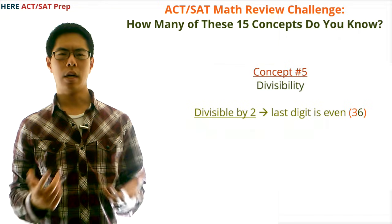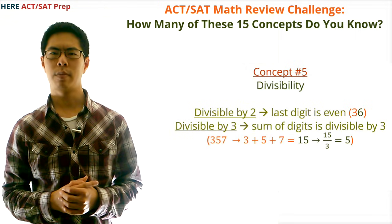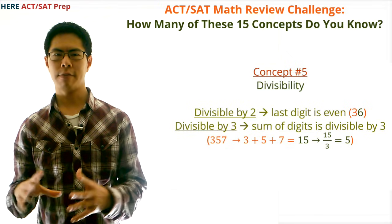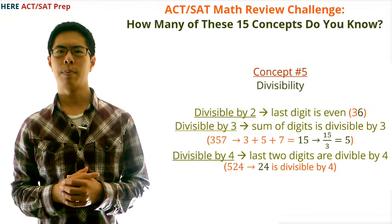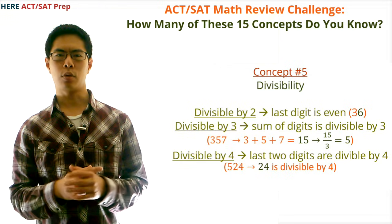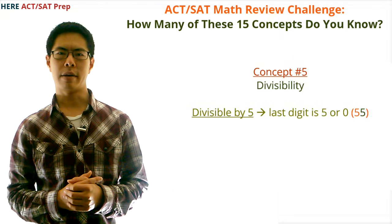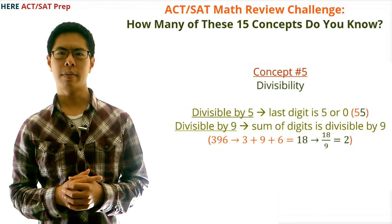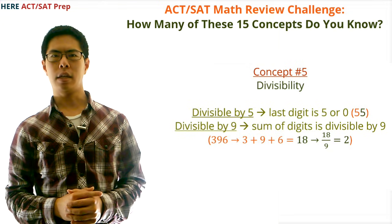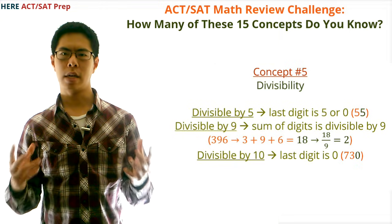Concept number five: divisibility. A number is divisible by 2 if the last digit is even — e.g., 36 is divisible by 2 because the last digit is 6. Divisible by 3 if the sum of the digits is divisible by 3 — e.g., 357: 3+5+7=15, which is divisible by 3. Divisible by 4 if the last two digits are divisible by 4 — e.g., 524: last two digits are 24. Divisible by 5 if the last digit is 5 or 0 — e.g., 55. Divisible by 9 if the sum of digits is divisible by 9 — e.g., 396: 3+9+6=18. Divisible by 10 if the last digit is 0 — e.g., 730.